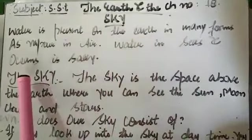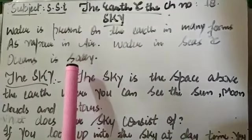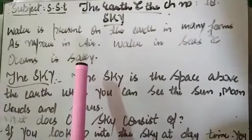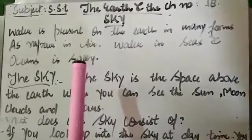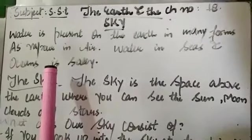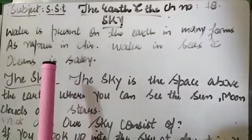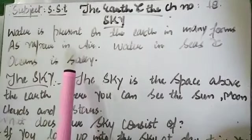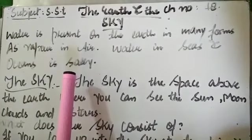Water in seas and oceans is salty — salty means that it is namkin water.